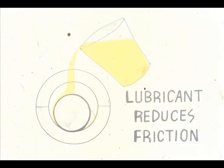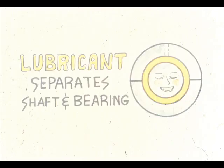The friction we have been describing may be reduced through the use of a lubricant. A film of lubricant between the shaft and the bearing separates the two parts during operation, reducing friction and also helping to dissipate any heat which is generated.